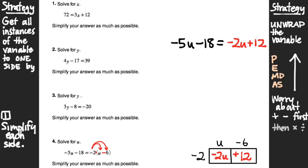Now that both sides are as simple as they're going to get, we still have the problem that the variable u resides on both sides of the equation. Before we go any further, we have to get all instances of that variable to one side. That's going to be step 2 in our strategy. This is what's preventing us from using reverse order of operations to get where we're going. How do we get all the u's to one side?